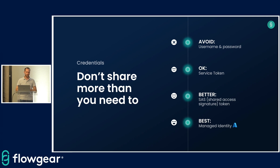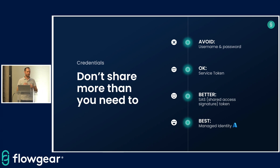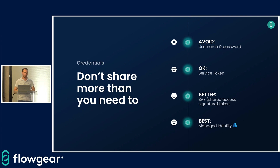Another thing you can do is if you're using a Flowgear drop point to integrate with an on-prem resource — say, a Microsoft SQL database — you might default to using a username and password. A better option is to use Windows authentication, so you don't need to supply a username and password in your Flowgear connection. Instead, at the drop point service in Windows, you run that service under a specific user account that already has the rights to that database. That means Flowgear doesn't even need to have a record of those credentials — authentication is delegated out and handled by that Windows server.